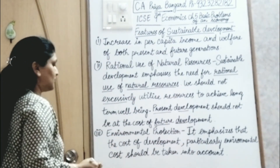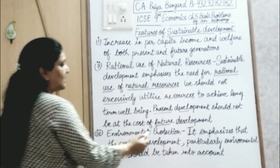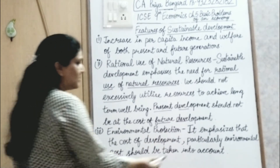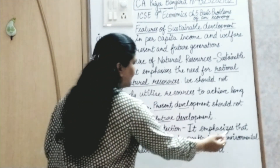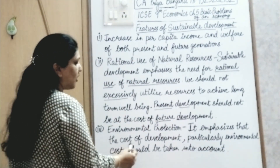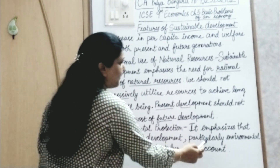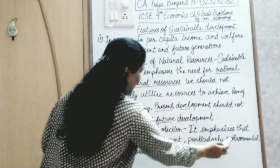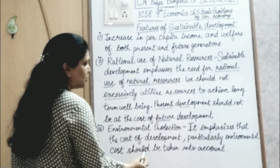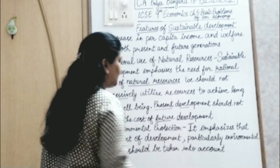Point number three: environmental protection. Sustainable development emphasizes that the cost of development, particularly environmental cost, should be taken into account.